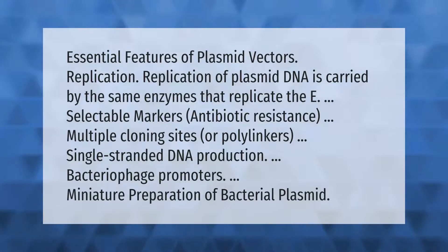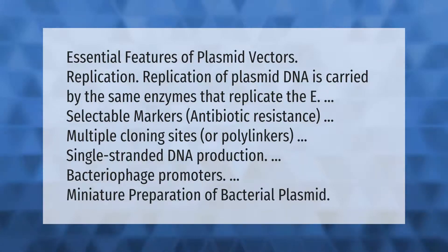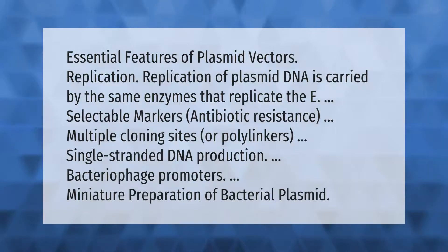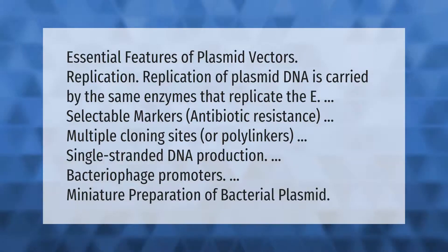Essential features of plasmid vectors include: replication — plasmid DNA is replicated by the same enzymes that replicate the host chromosome; selectable markers such as antibiotic resistance; and multiple cloning sites, or polylinkers, as well as single-stranded DNA production.